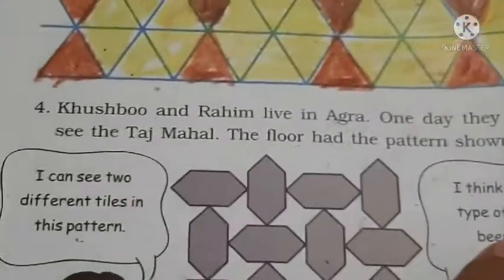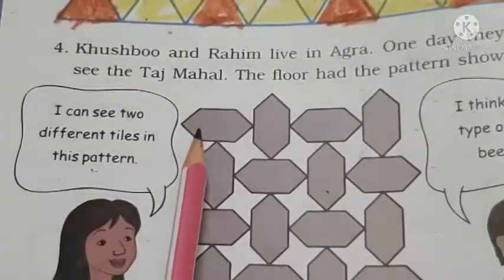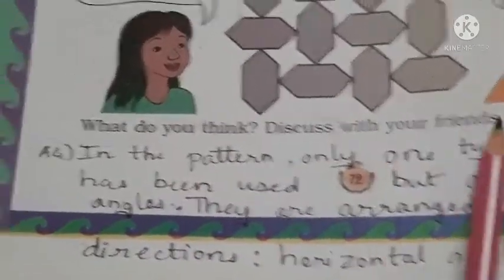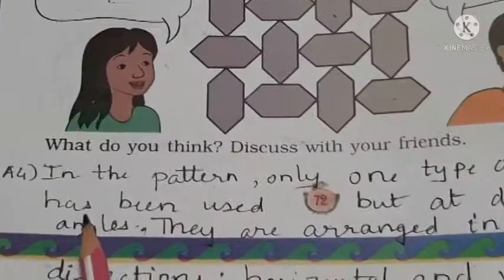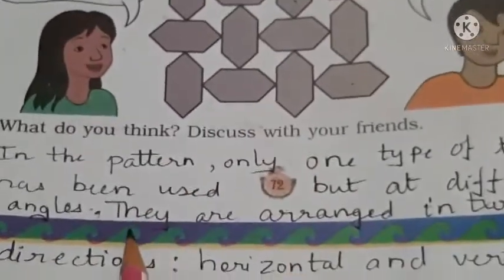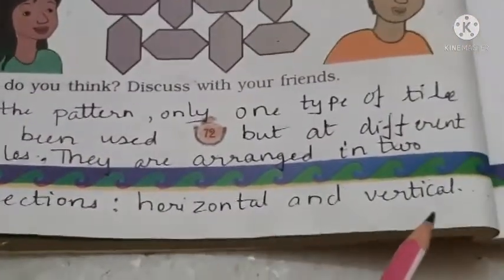Khushbu and Rahim live in Agra. One day they went to see the Taj Mahal. The floor had a pattern — one horizontal and one vertical hexagon. Khushbu says she can see two different tiles in this pattern, placed differently. But Rahim thinks only one type of tile has been used. What do you think? Discuss with your friends. In the pattern, only one type of tile has been used but at different angles — one horizontal and one vertical.